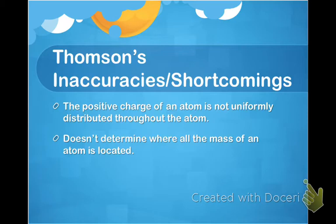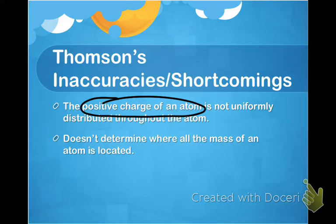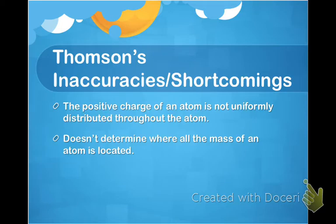Thomson's shortcomings: first, the positive charge of an atom is not universally distributed throughout the atom. Rutherford, the next scientist, was able to determine that the positive charge of an atom was actually enclosed inside a tiny nucleus. Thomson thought the entire atom was just uniformly positively charged with little seeds of negative charge — electrons — spread throughout. He also did not determine where all the mass of an atom is located.